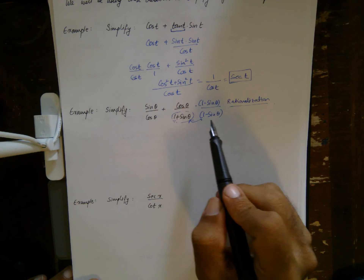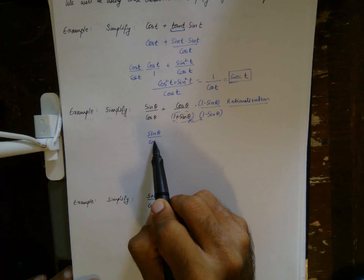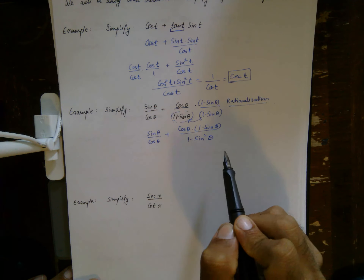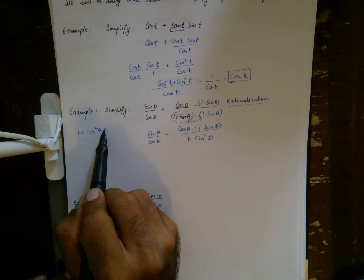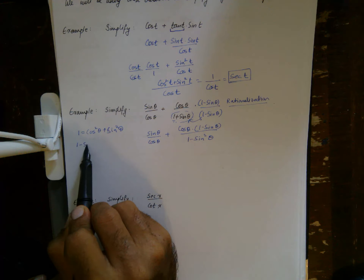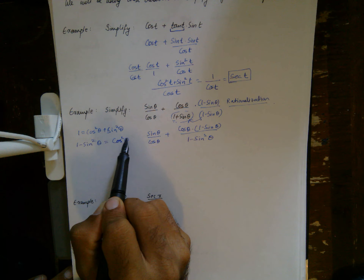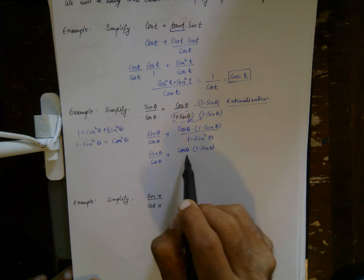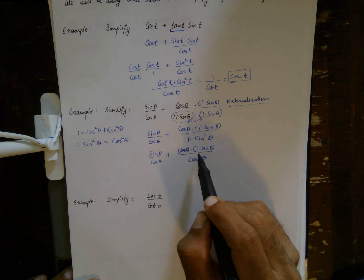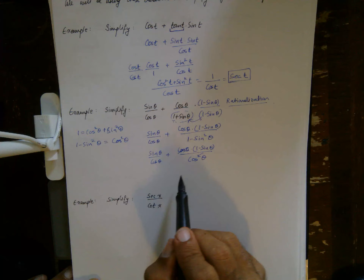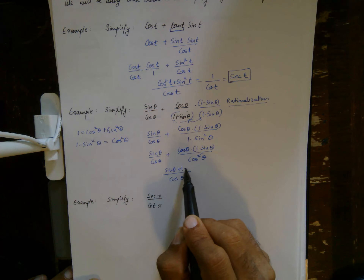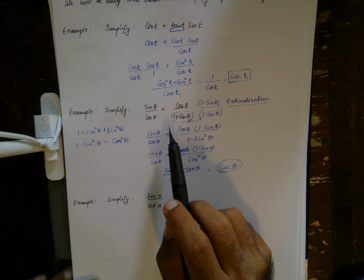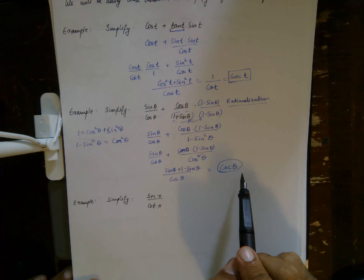So this becomes sin(θ)/cos(θ) plus cos(θ)·(1 − sin θ) over (1 − sin²θ), which is cos²(θ). One cosine cancels, making it easy to combine fractions over the common denominator cos(θ). The numerator becomes sin(θ) + 1 − sin(θ), and the sine terms cancel, leaving 1/cos(θ). Once again, even starting with a complicated fraction, we end up with a single ratio — 1/cos(θ), which is secant. That's what simplification means.